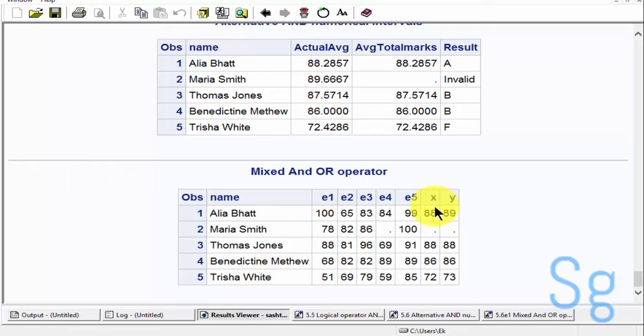Here you can notice that we have got our output. This X is our original rounded average total marks whereas Y is our new calculated average total marks after addition of one mark as per our specified conditions.